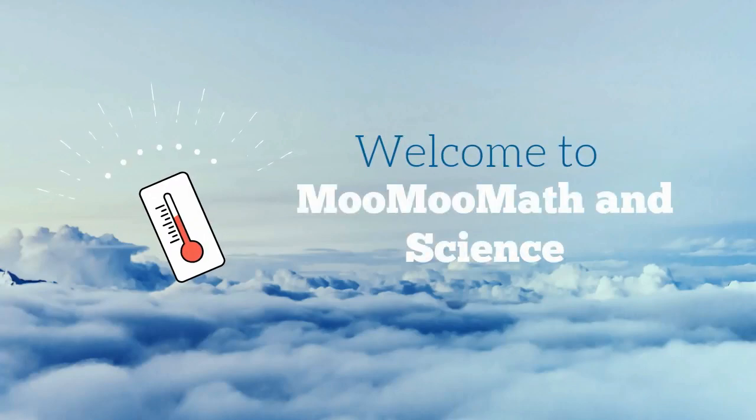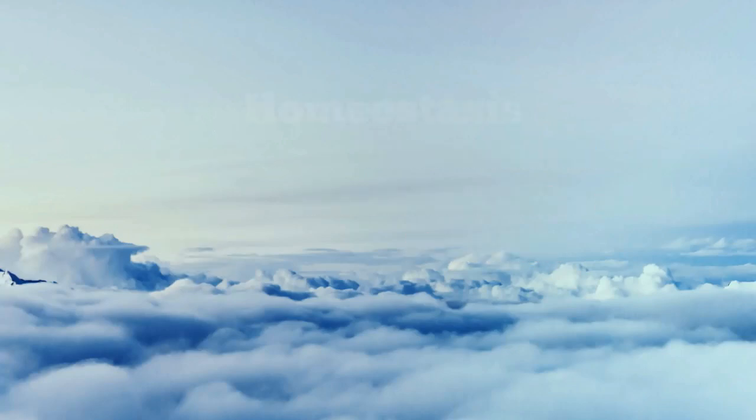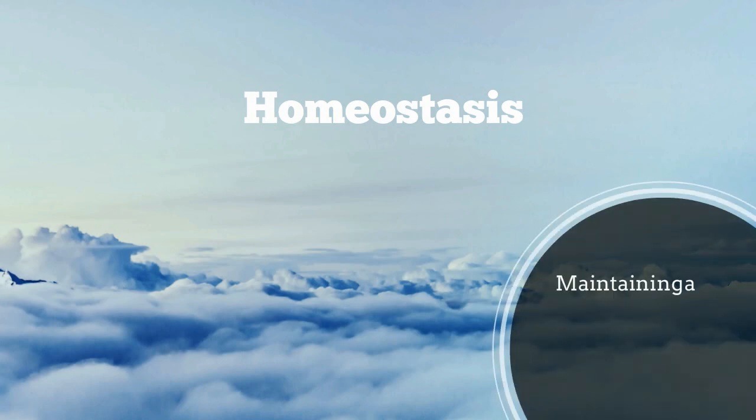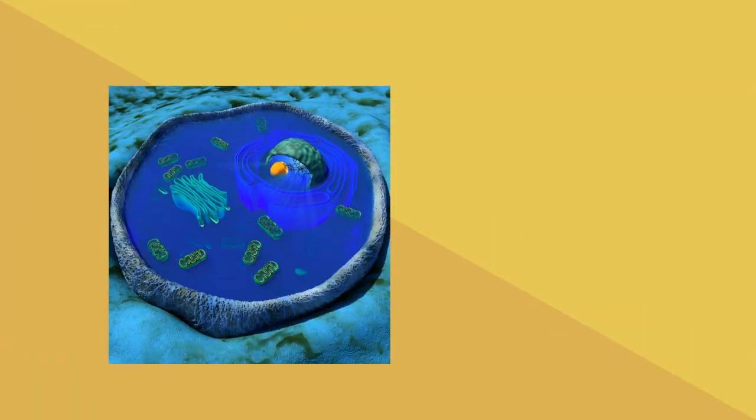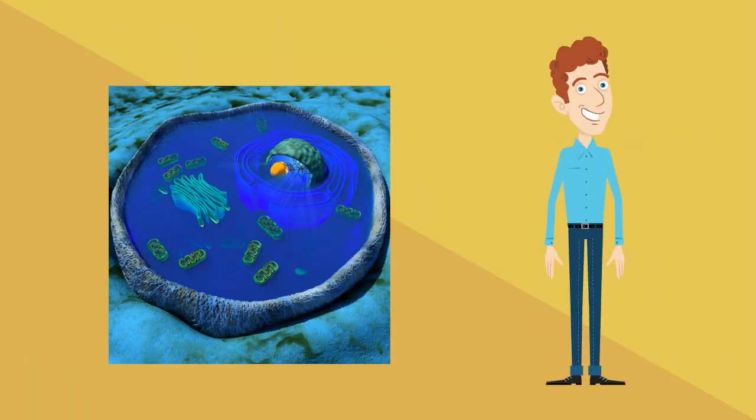Welcome to MooMooMath and Science. In this video I would like to talk about homeostasis. Homeostasis is maintaining a constant internal environment. Cells and organisms need their environment to be just right in order for them to survive.